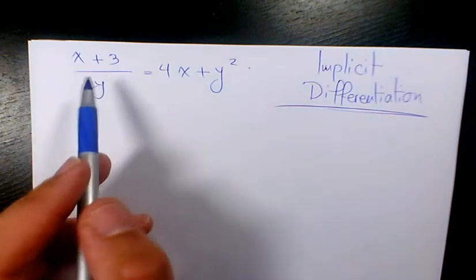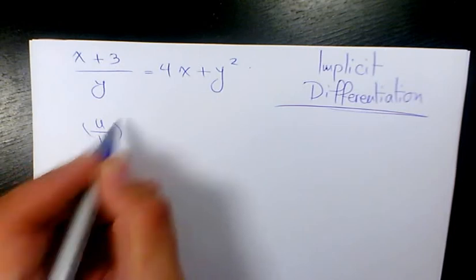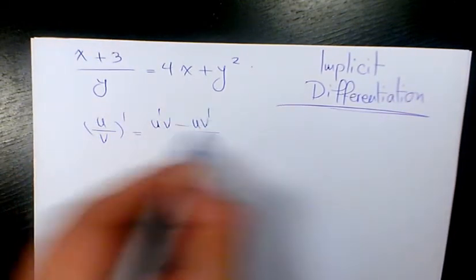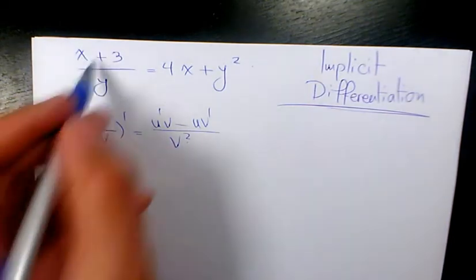We need to define the derivative. We know u/v, when you find out the derivative, is going to be u'v - uv' divided by v^2, which is going to be the derivative of x+3, which is 1, times y...